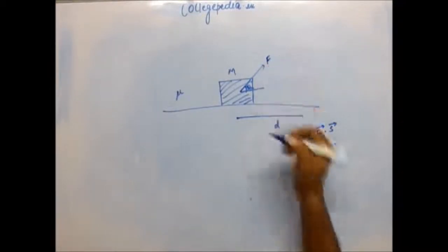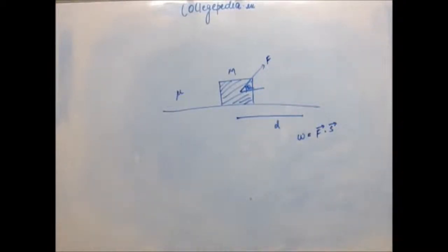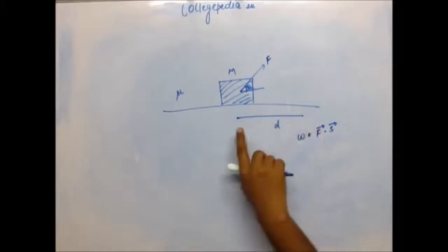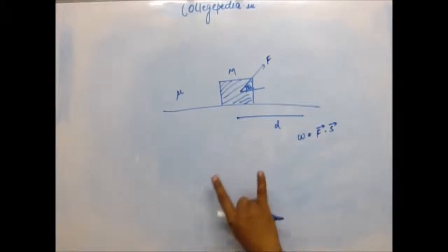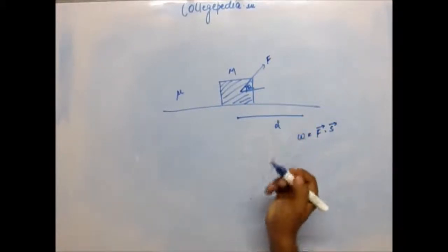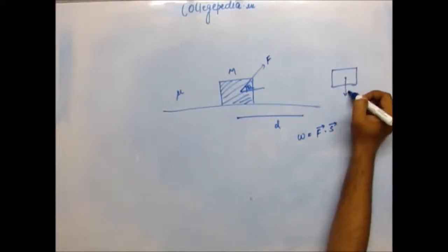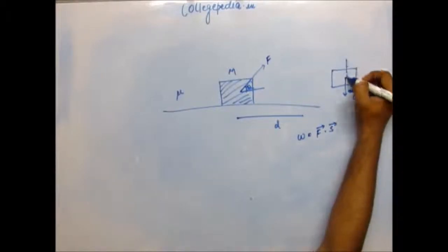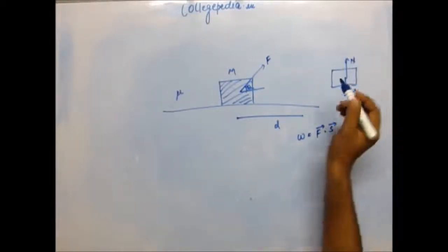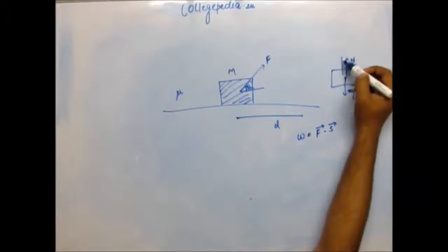Considering that the force applied is F, all you have to do is write the equation for equilibrium since it is not gaining any kinetic energy, so the forces should be balanced. Balancing the force vertically, if you draw the FBD of this block: Mg is acting downward, normal reaction is acting upward, and F sin θ will also be upward.